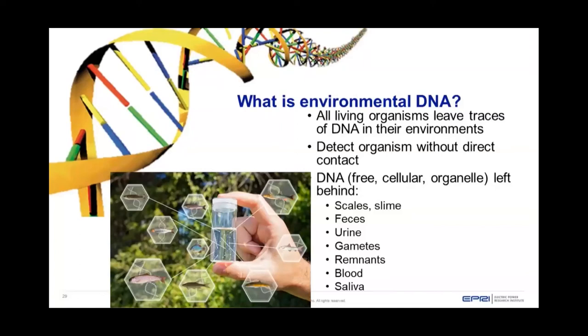The advantage of using eDNA is that we can detect an organism without direct contact — we don't actually have to come in contact with our target species. The DNA left behind can be free DNA, meaning it's no longer bound in a cell; it can be cellular DNA like nuclear DNA; or it could be organelle DNA like mitochondrial DNA or chloroplast DNA. Sources include scales and slime from fish, feces or urine, gametes when organisms are spawning particularly in aquatic habitats, and carcasses left behind.